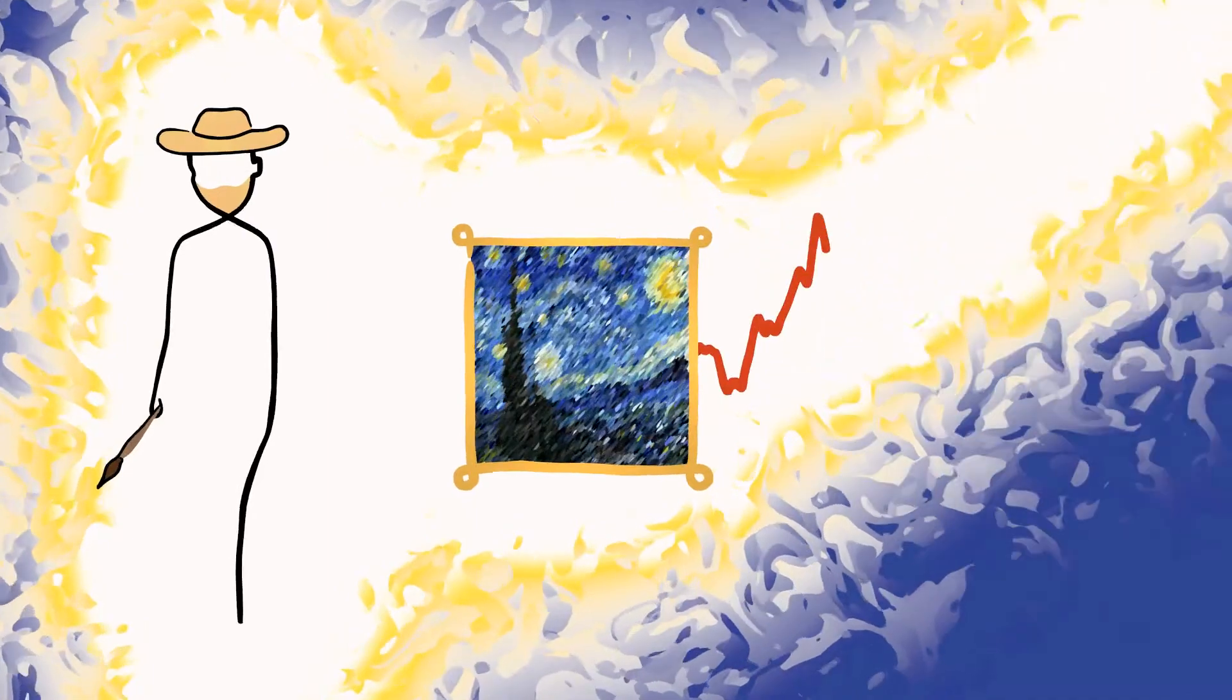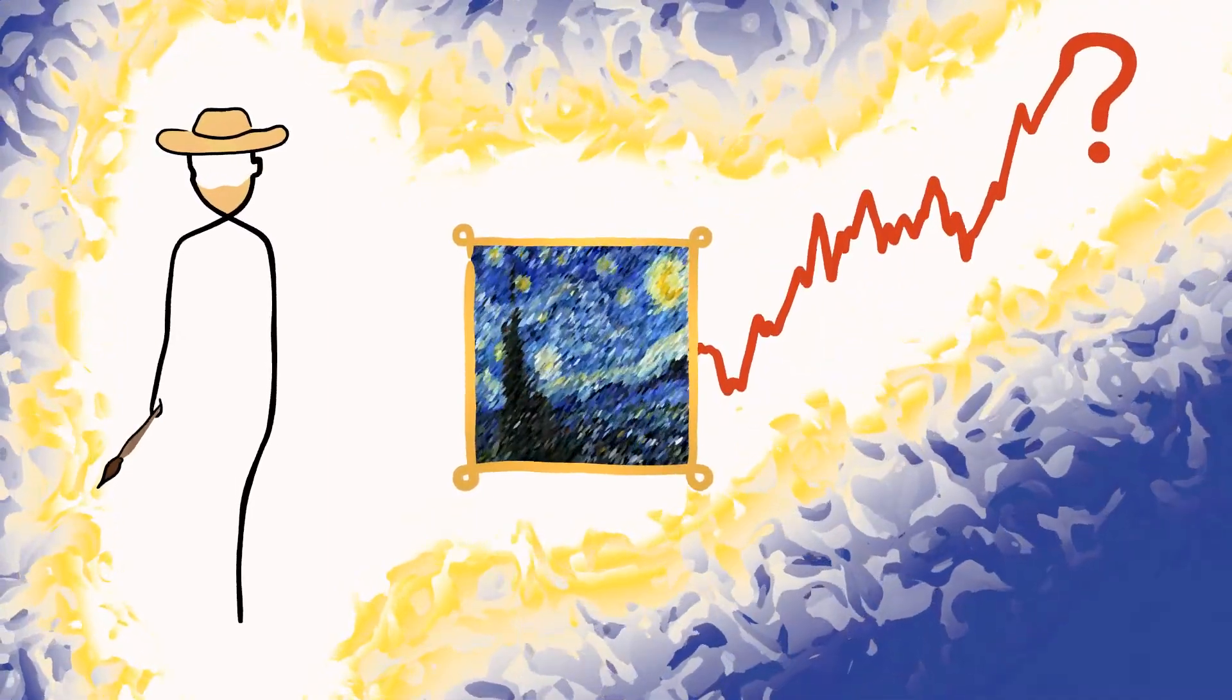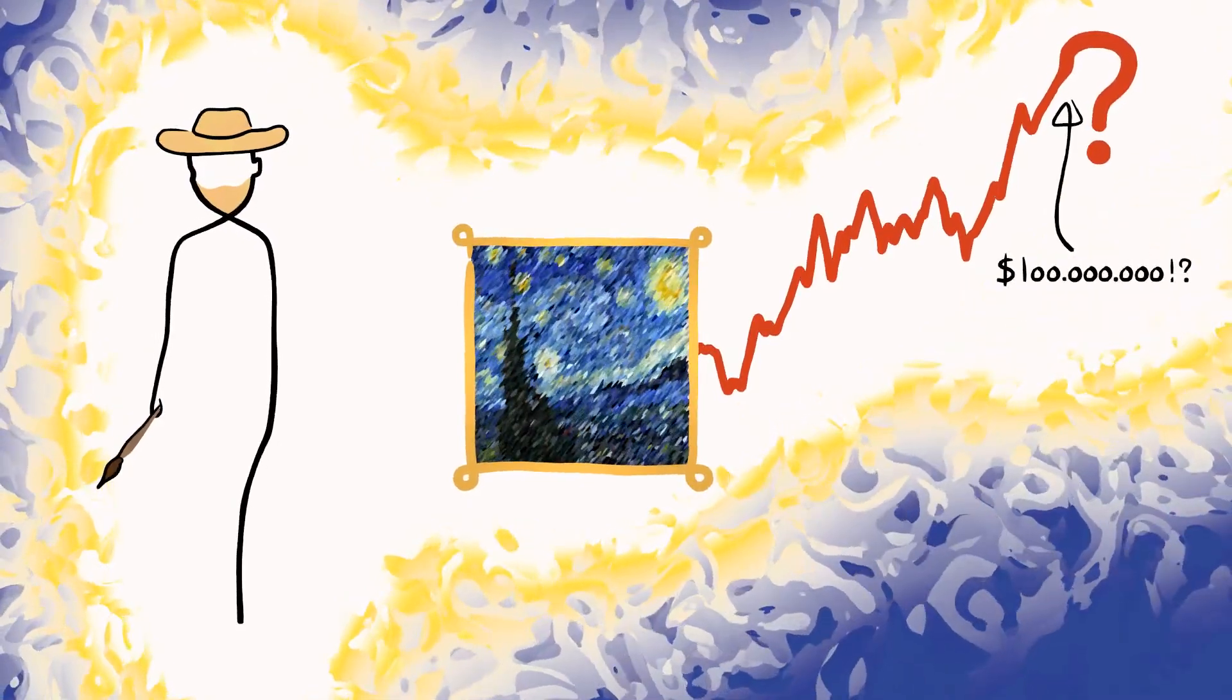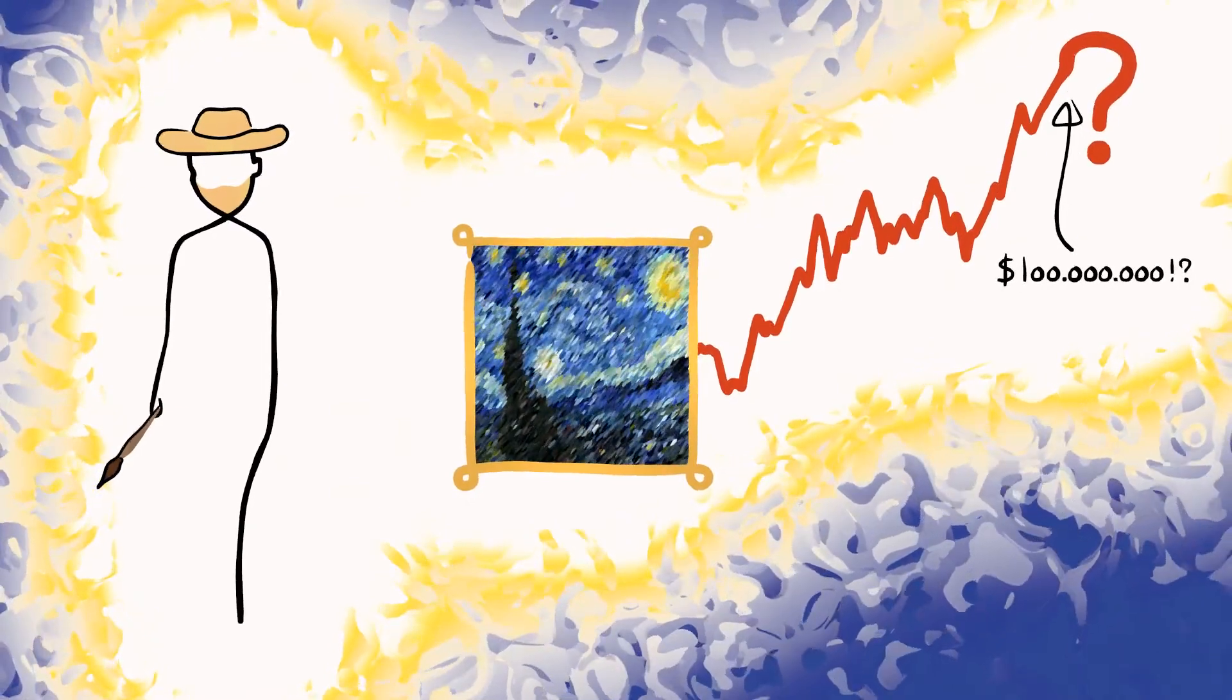If your family bought a painting from Van Gogh himself back in 1890, would that have been a good investment for the family's fortune? That seems like a stupid question to even ask. His paintings could sell for more than a hundred million dollars today. That must have been the investment of the century.